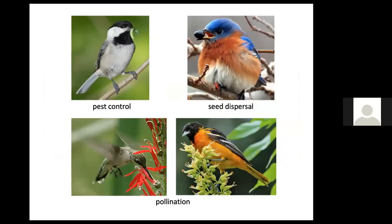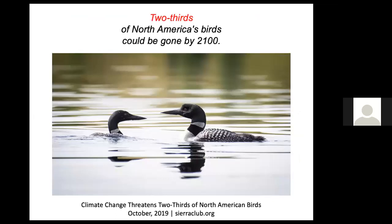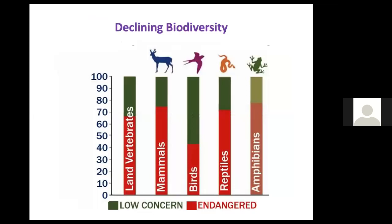Birds are categorized as beneficial organisms because two out of the three Ps — predators and pollinators — primarily provide pest control; they eat a lot of insects. They also disperse seeds in the environment. There are only two birds that are pollinators here in New England: the Ruby-throated Hummingbird and the Baltimore Oriole. Bird populations have declined alarmingly in the last half century and will continue to do so unless we as a society make different decisions. Birds and other vertebrates are also declining in diversity, which is important for healthy ecosystems.